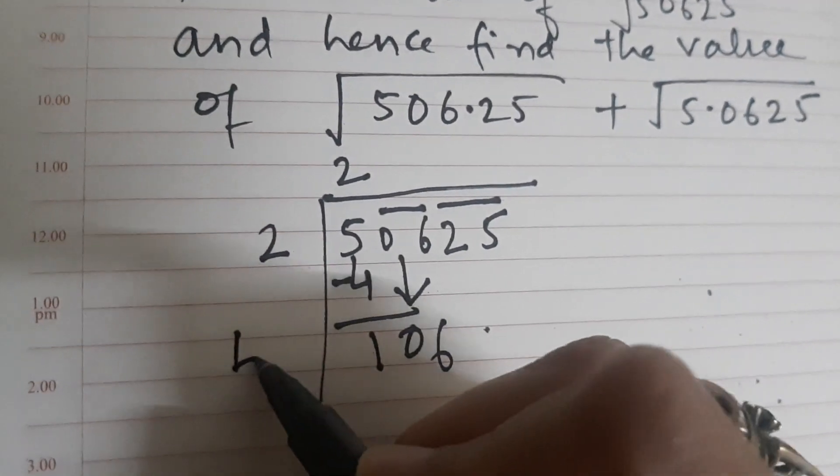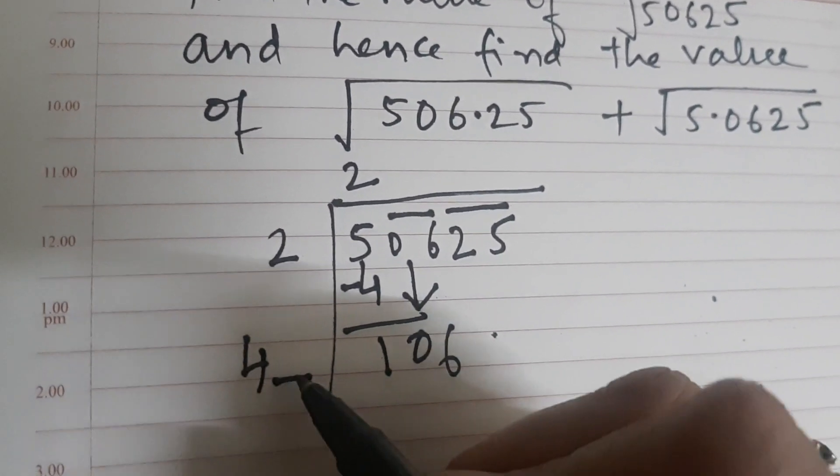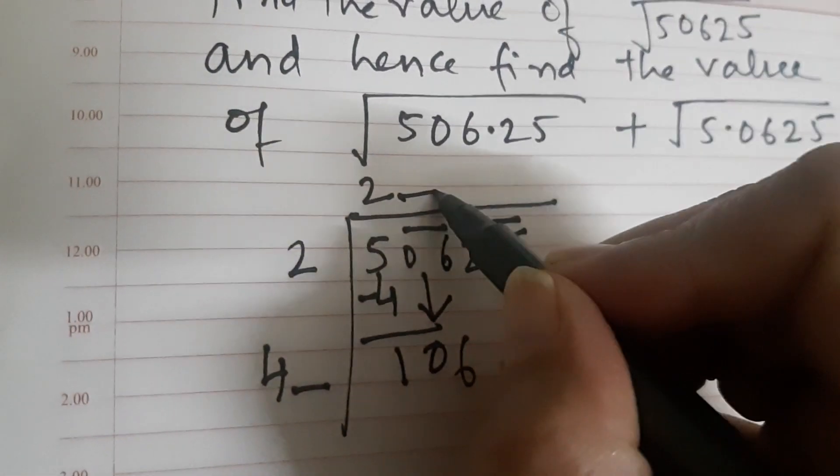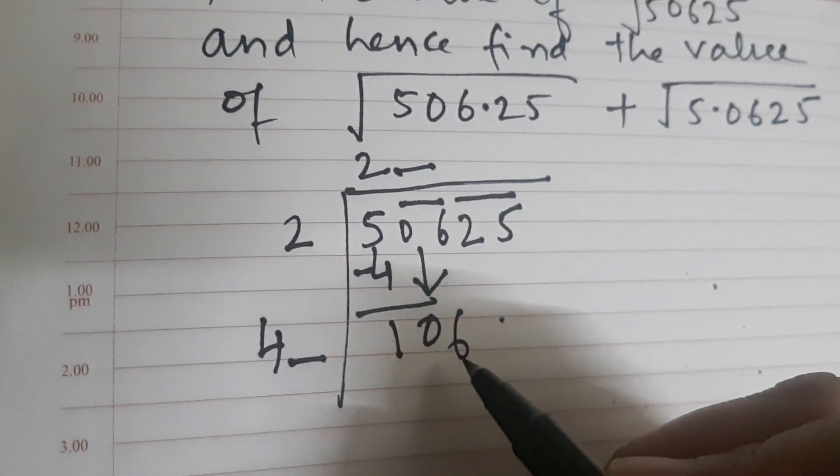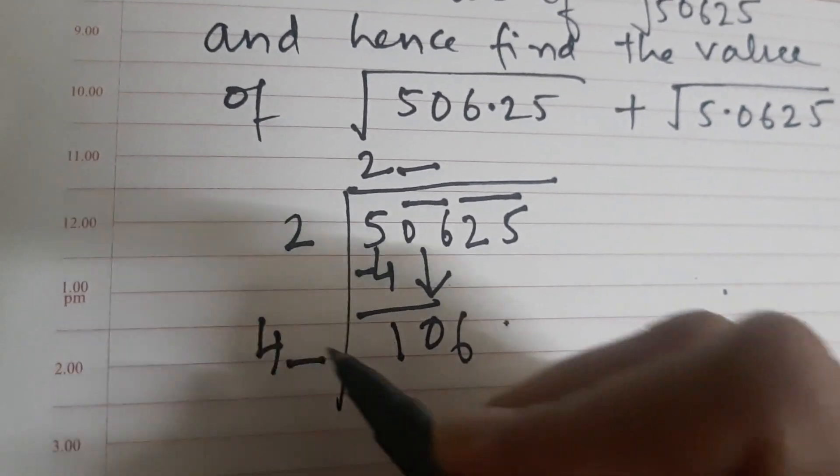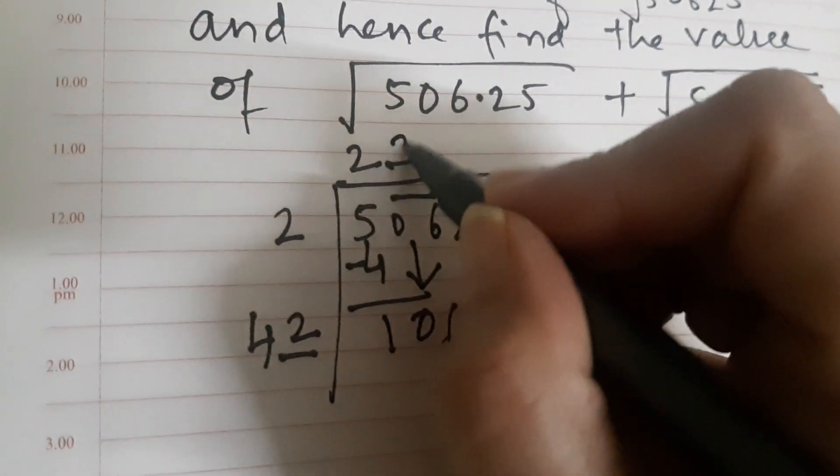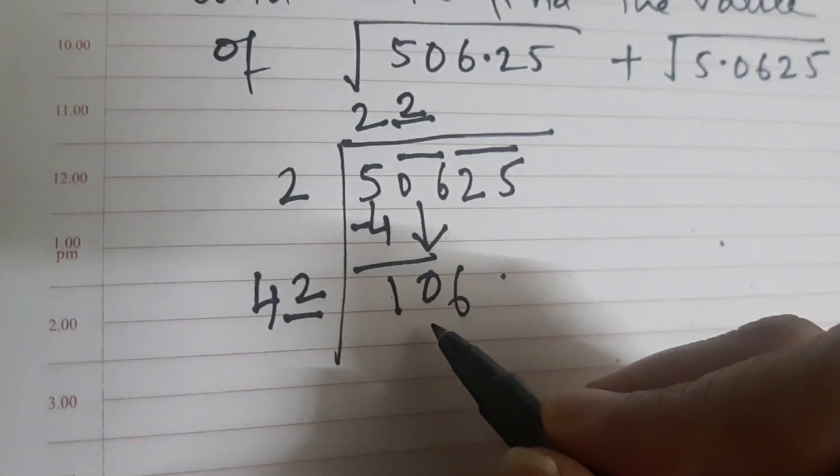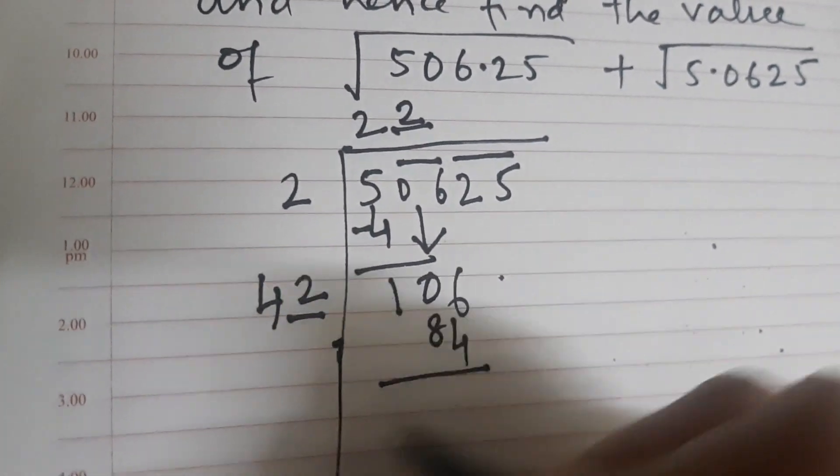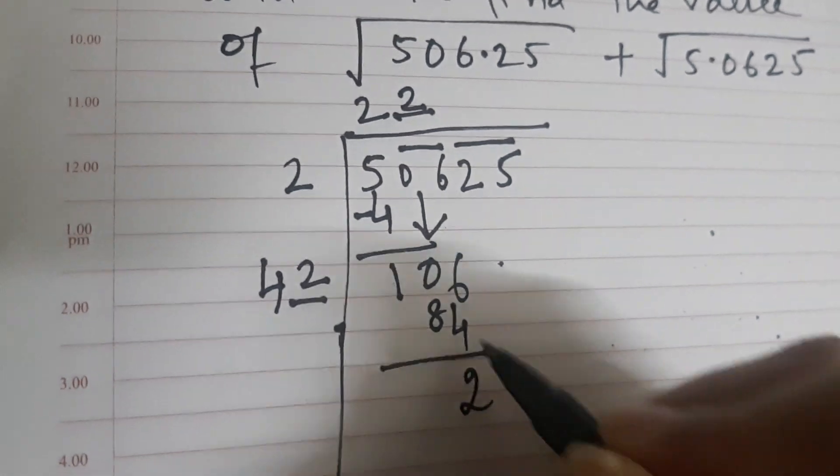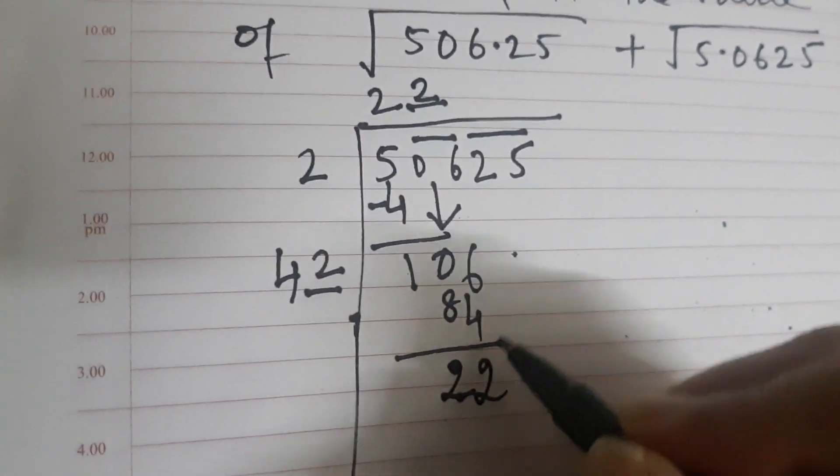Take out the next period which is 06. 2 plus 2 is 4. Now look for another digit which you will place after 4 and multiply with the same digit to get a number less than or equal to 106. So I find that if I multiply 42 by 2, I get 84.